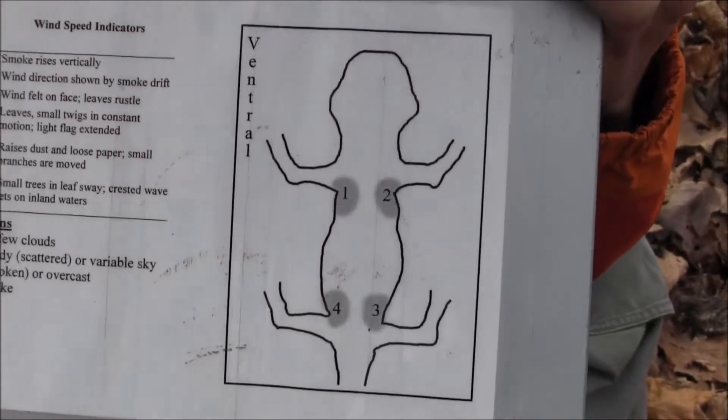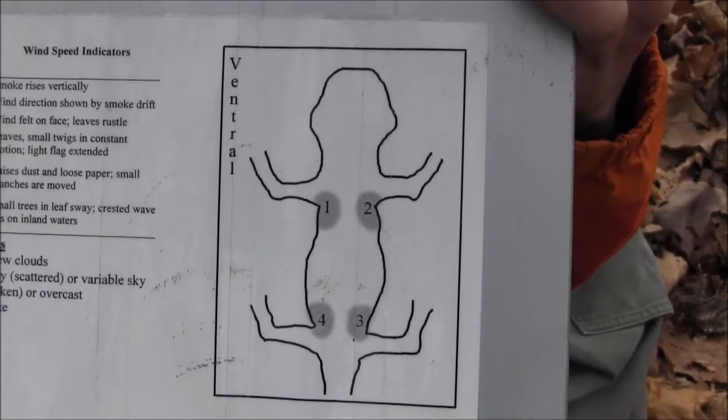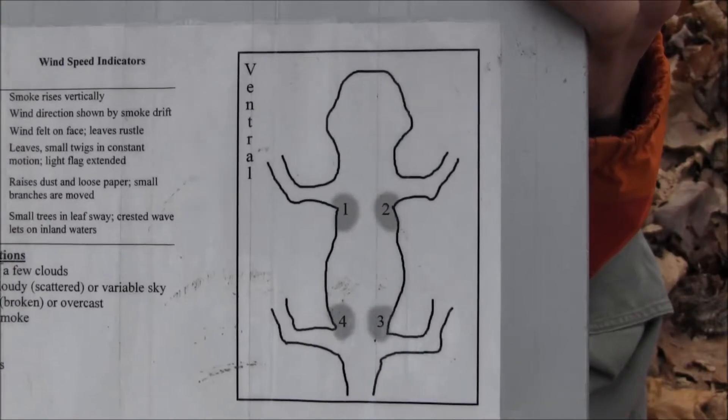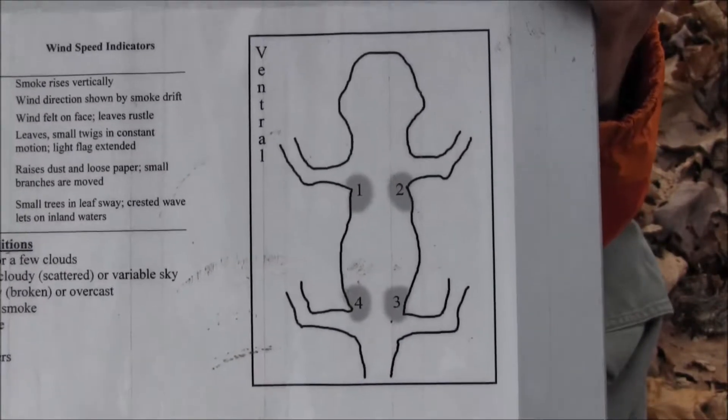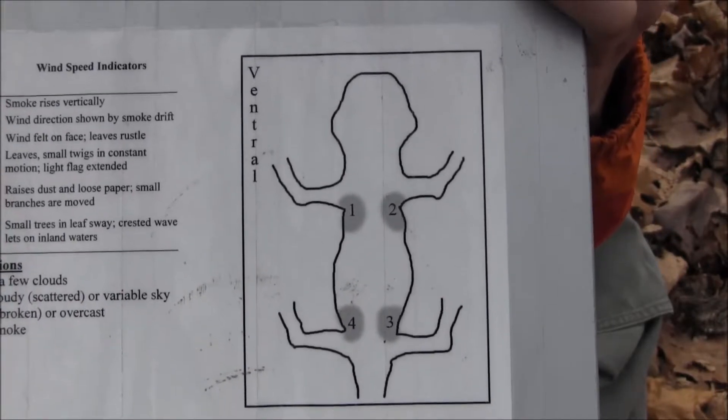So here I've got some salamanders that we've caught from our cover board arrays, and we'll start marking them with our unique identification code. We've got a specific marking scheme we're using here. Looking at the ventral side of the salamander, position one, position two, position three, and position four are four different marking locations.